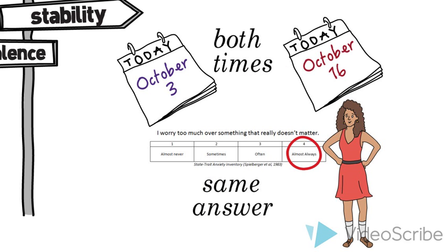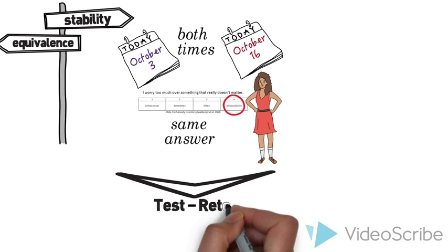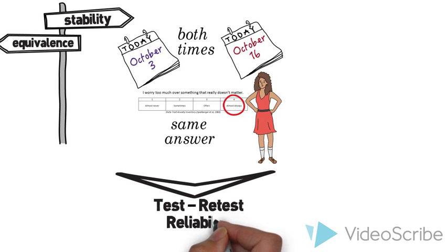If a question has good stability, you should receive about the same answer both times you ask it. Asking the same question at two time points is called test-retest reliability for obvious reasons.